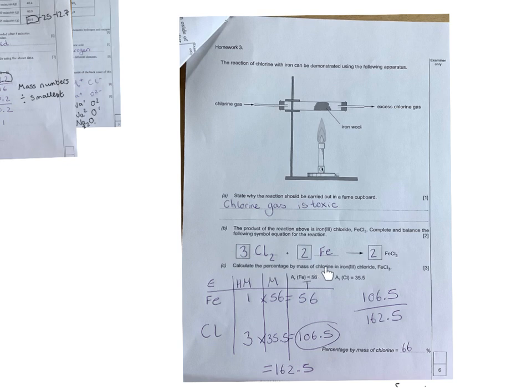Calculate the percentage by mass of chlorine in iron 3 chloride. So work out the overall MR, which is 162.5. So that's the overall MR, so you've got 1 iron, 3 chlorines, they're their mass numbers, that's the total there. And then you do the total mass of chlorine over the total mass, and it gave you 66%. So that's it.